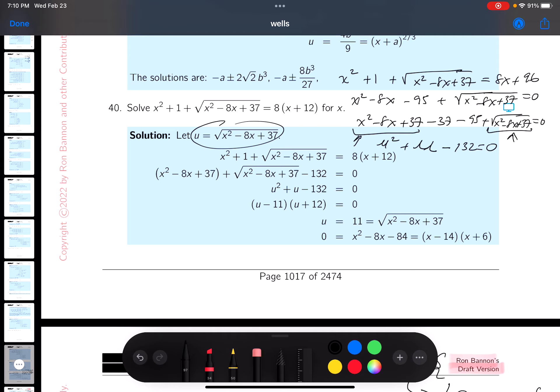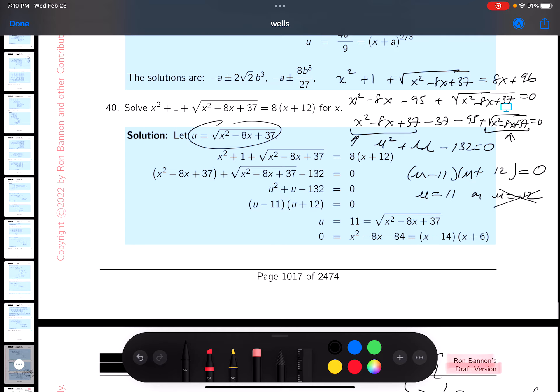So we got in terms of a u problem now which may be easier to deal with, and it does look easier to deal with. Why is that? U is going to be, looks like 11 and 12, and plus 12 minus 11. So u could be 11 or u could be minus 12.